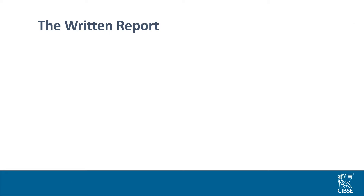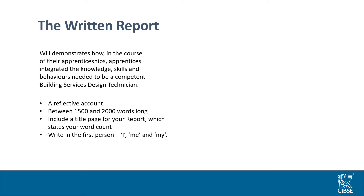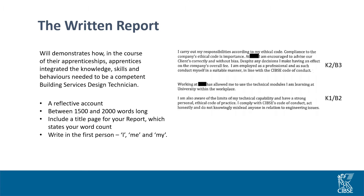Alongside your presentation, you'll need to submit a written report of 1,500 to 2,000 words prior to your assessment. It will demonstrate how you have acquired the key knowledge, skills and behaviours required to pass Endpoint Assessment. The report will be based on what you have done during the course of your apprenticeship, stating your roles and responsibilities. This is a reflective account, written in the first person, and it will include a title page.